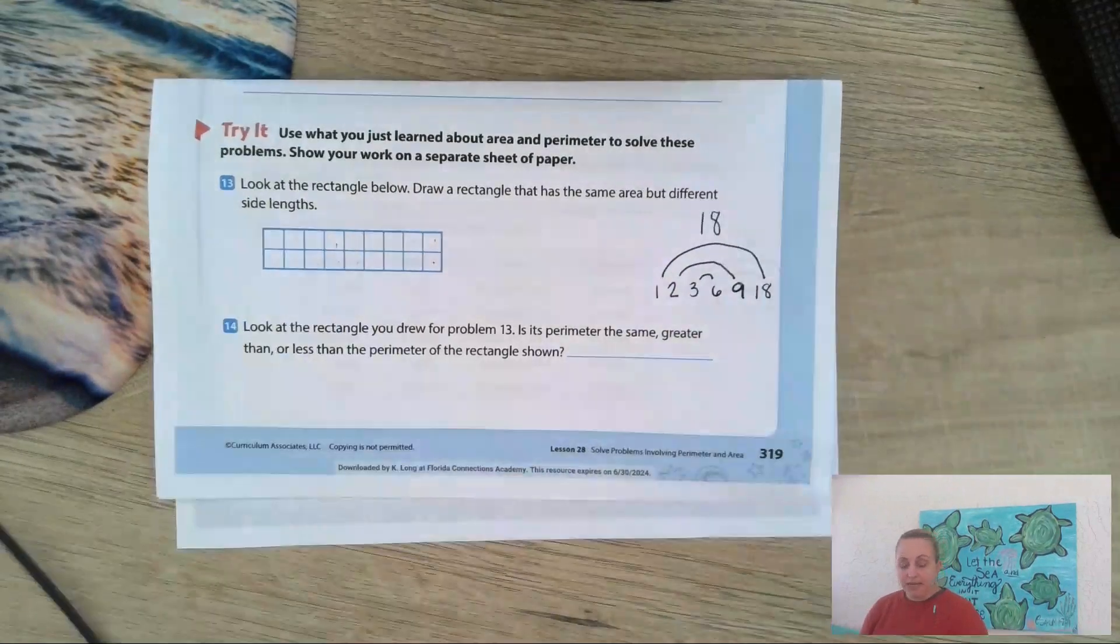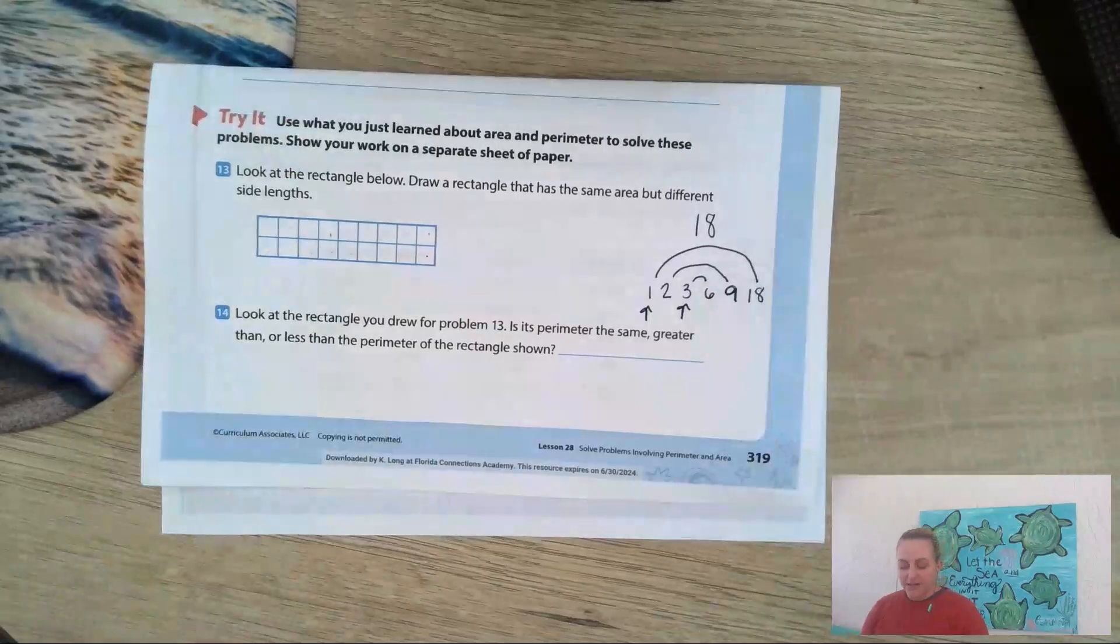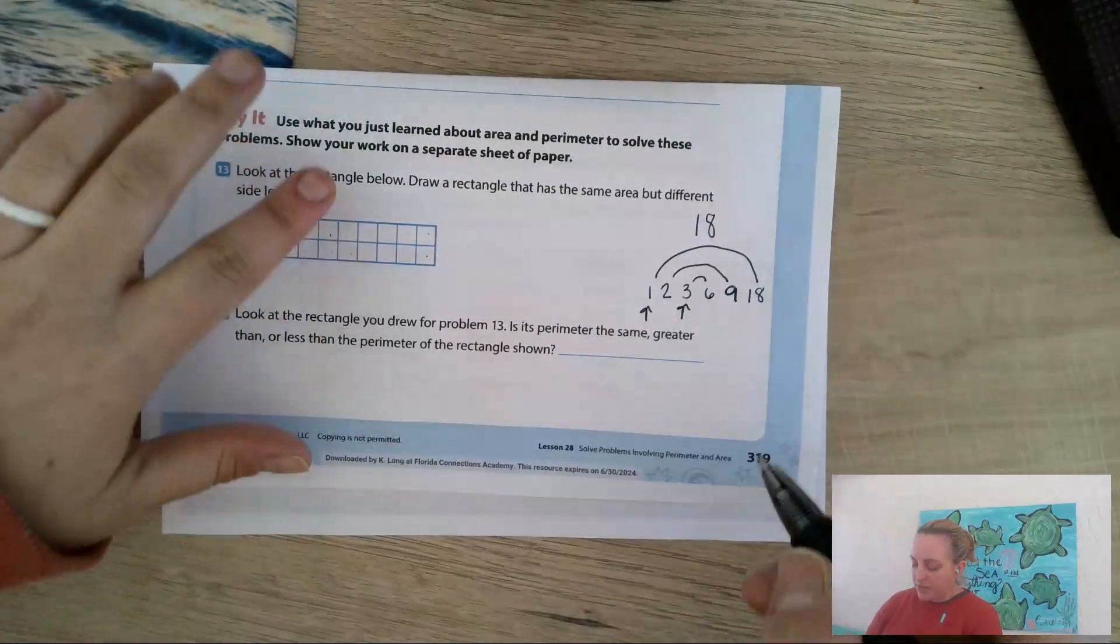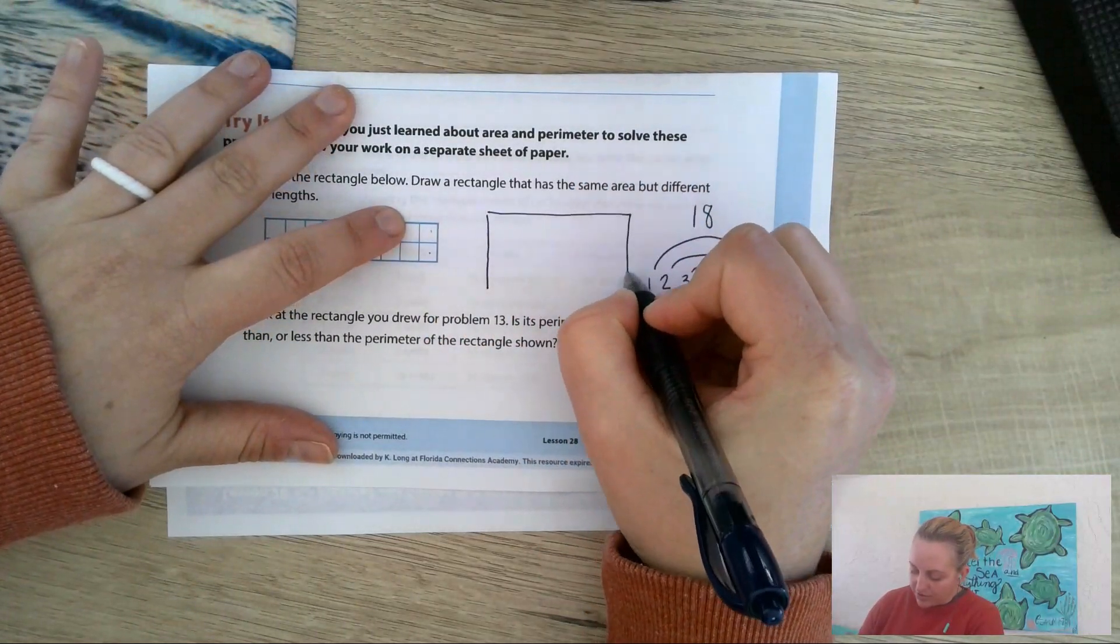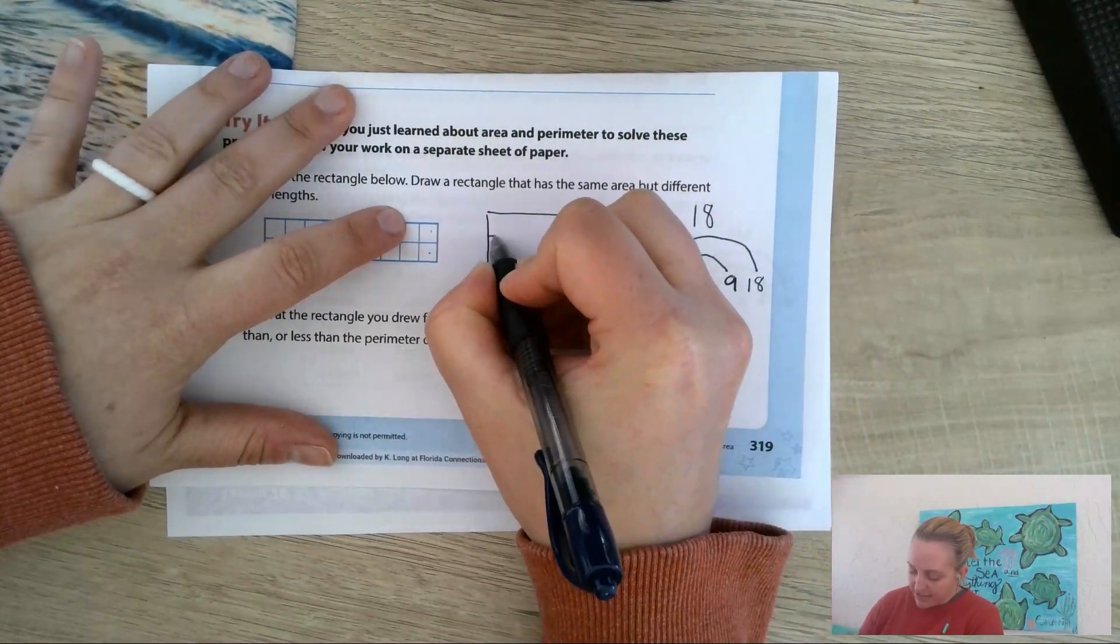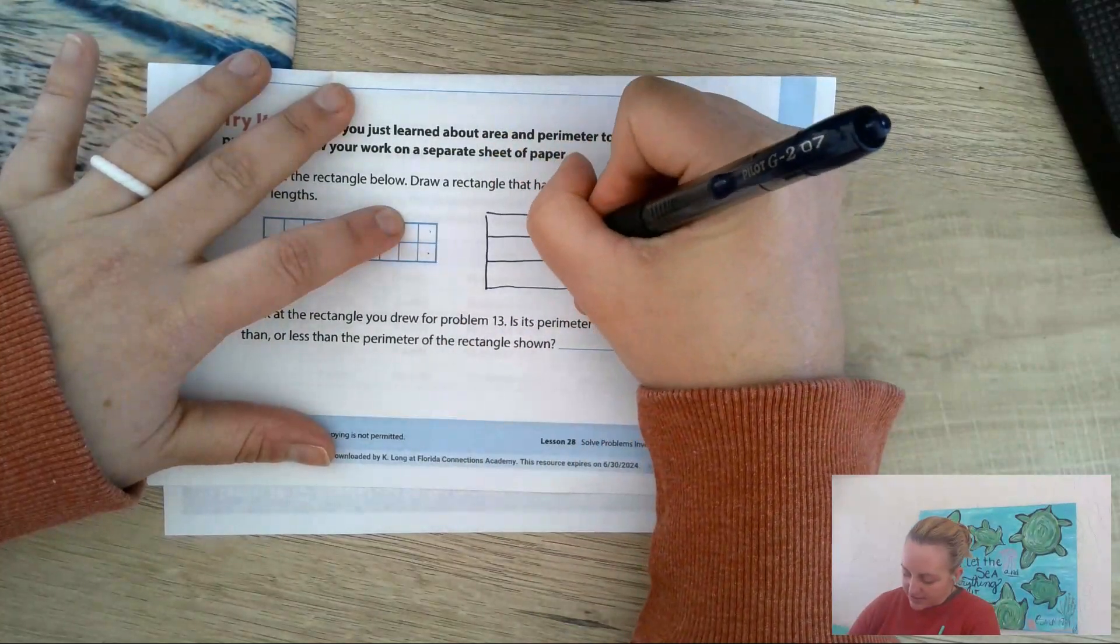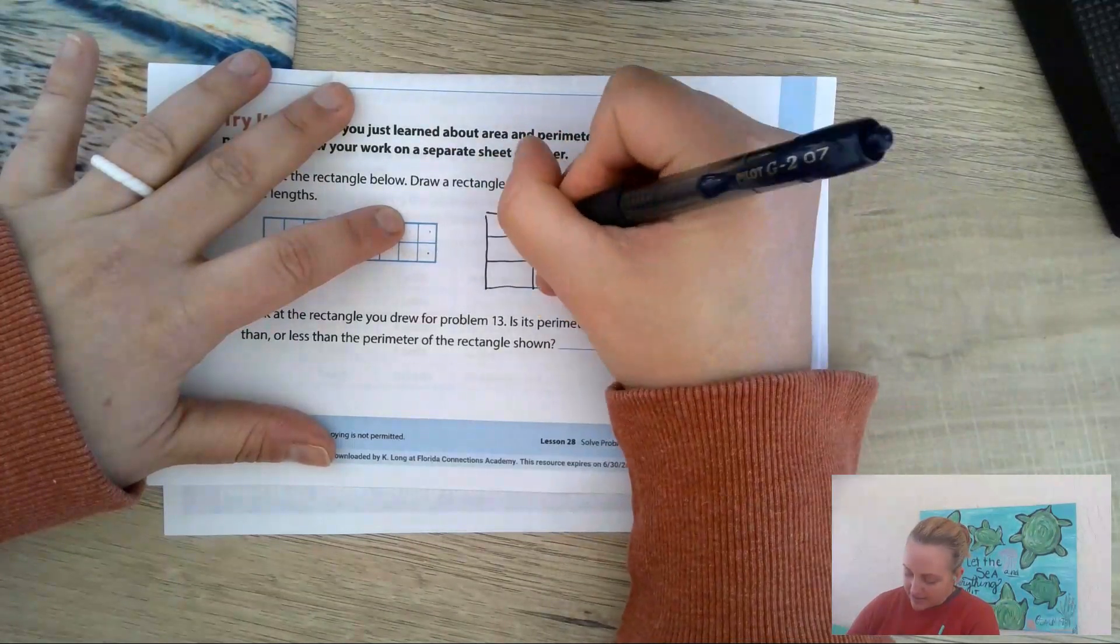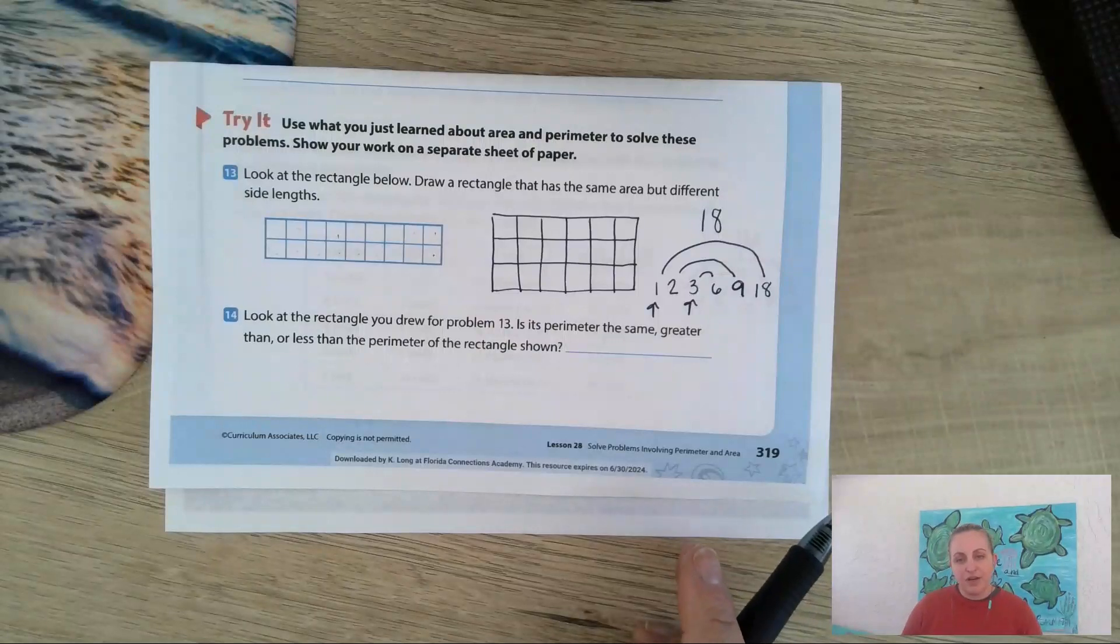So I could pick either this one or this one to draw. I could pick either one. I'm going to do the three times six. So I'm going to kind of draw it out and then draw in my rectangles. It has to be three down and six across.